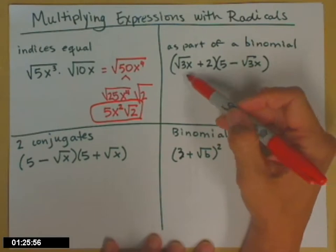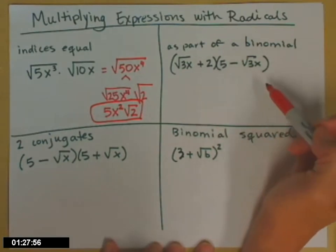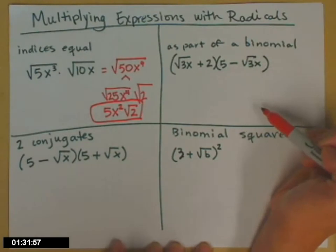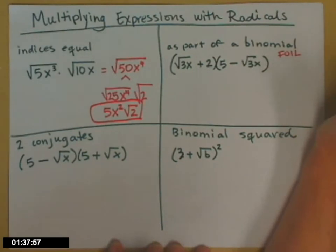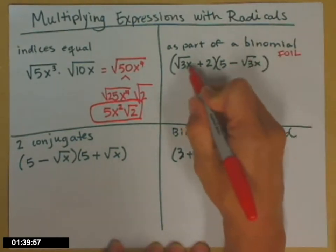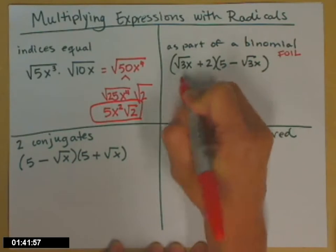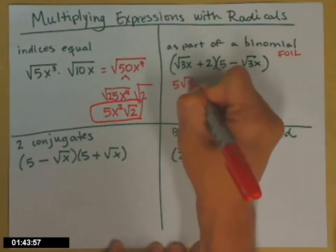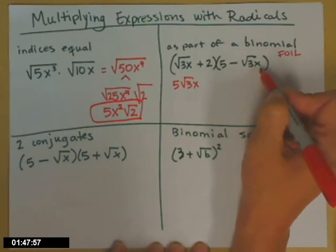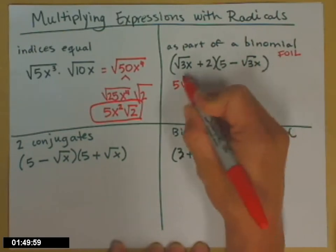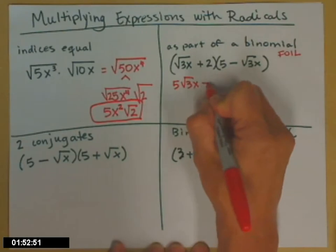Another common one is when you multiply two binomials where you have some radicals in there. In this case, I've made them the same so that we can see what happens that's nice. So whenever we multiply binomials, we often use that FOIL. So square root of 3x times 5. That's just 5 times the square root of 3x. Square root of 3x times square root of 3x. That's going to be just 3x with a negative sign because one of them was negative.